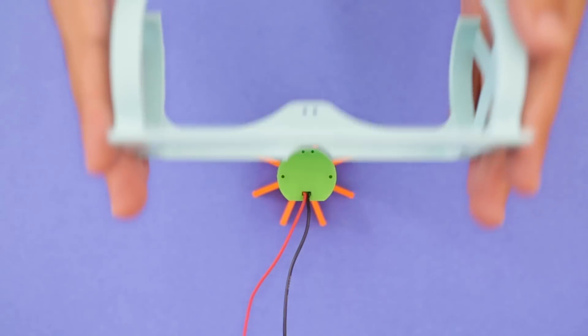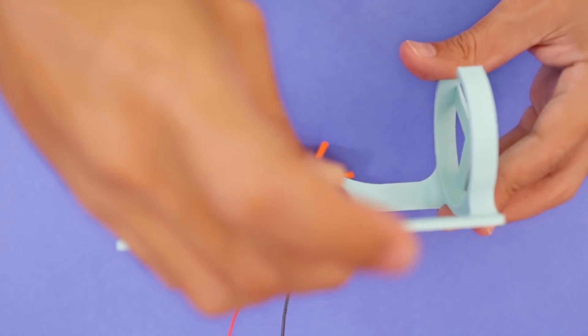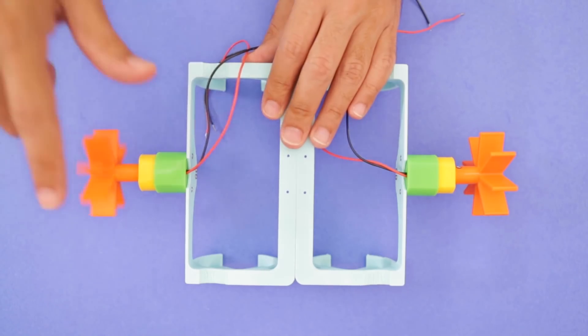The brackets for housing the pool noodles are secured to the motor mounts with additional machine screws. We'll need to assemble two of these to create our rover.